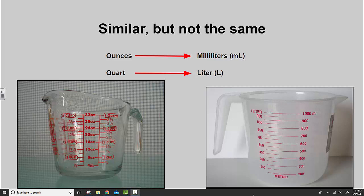However, if you look at the metric measuring cup on the right hand side, you can see that there's increments of 50 and increments of 100. This method of measuring is much clearer and simpler. And probably that's why most of the world uses this metric system for measurement.